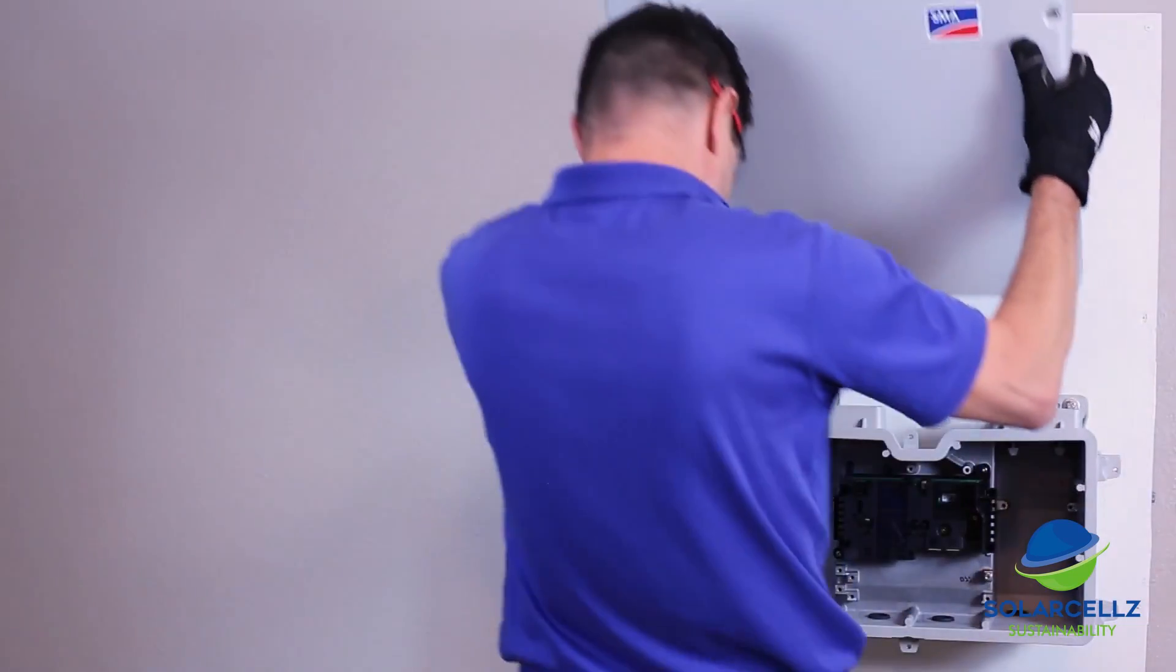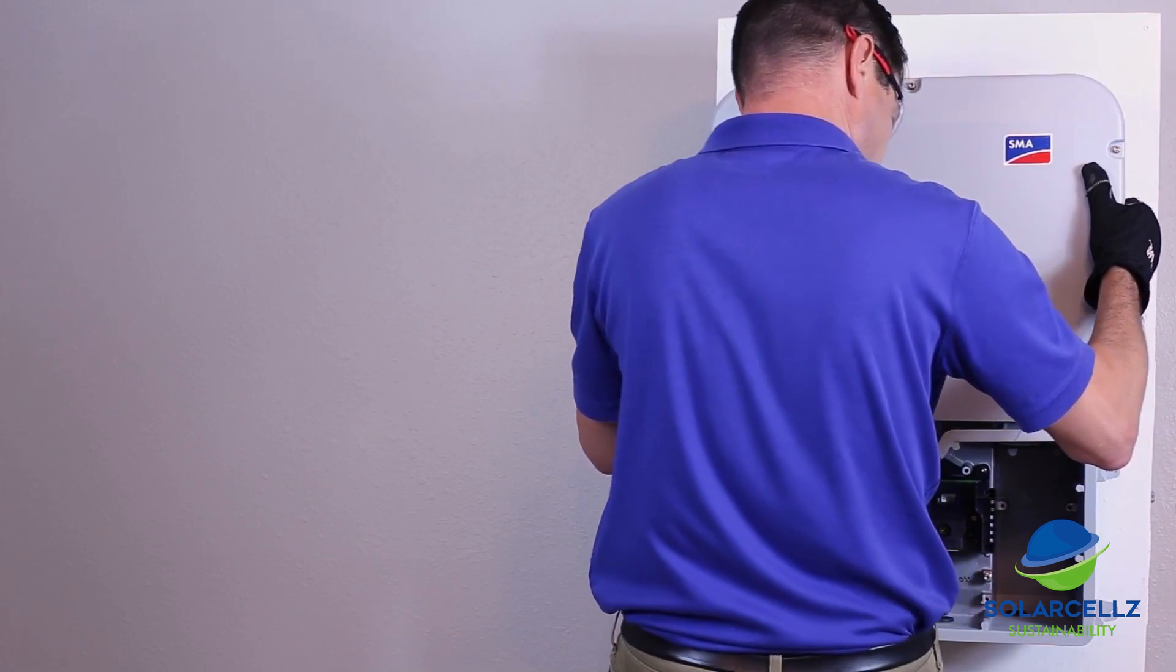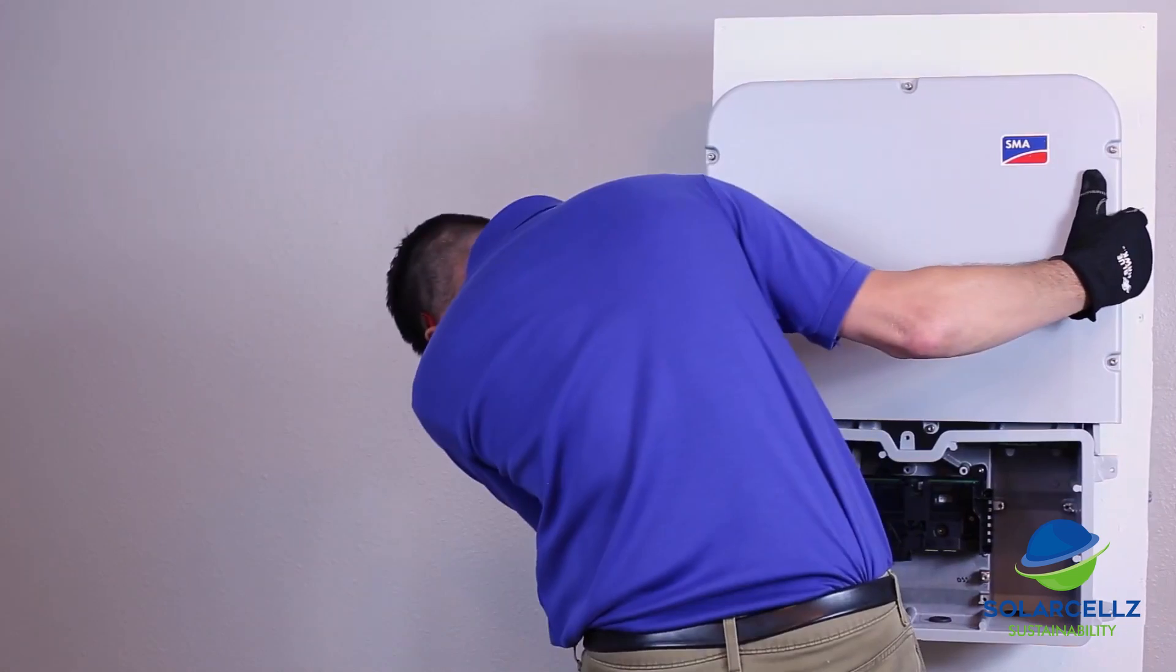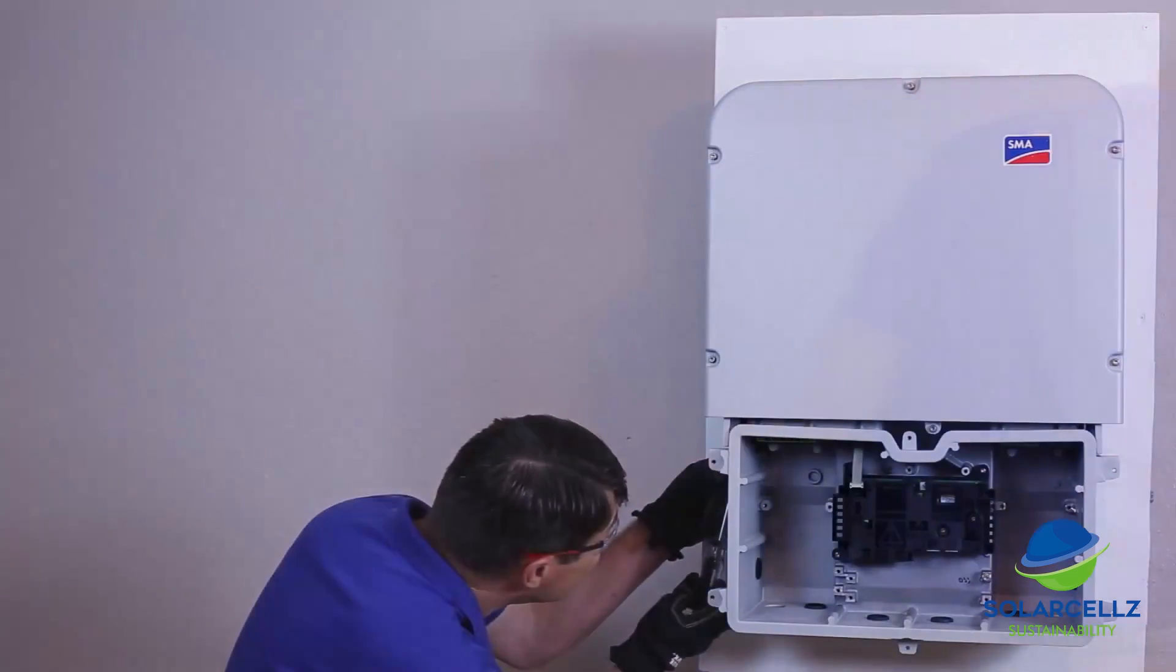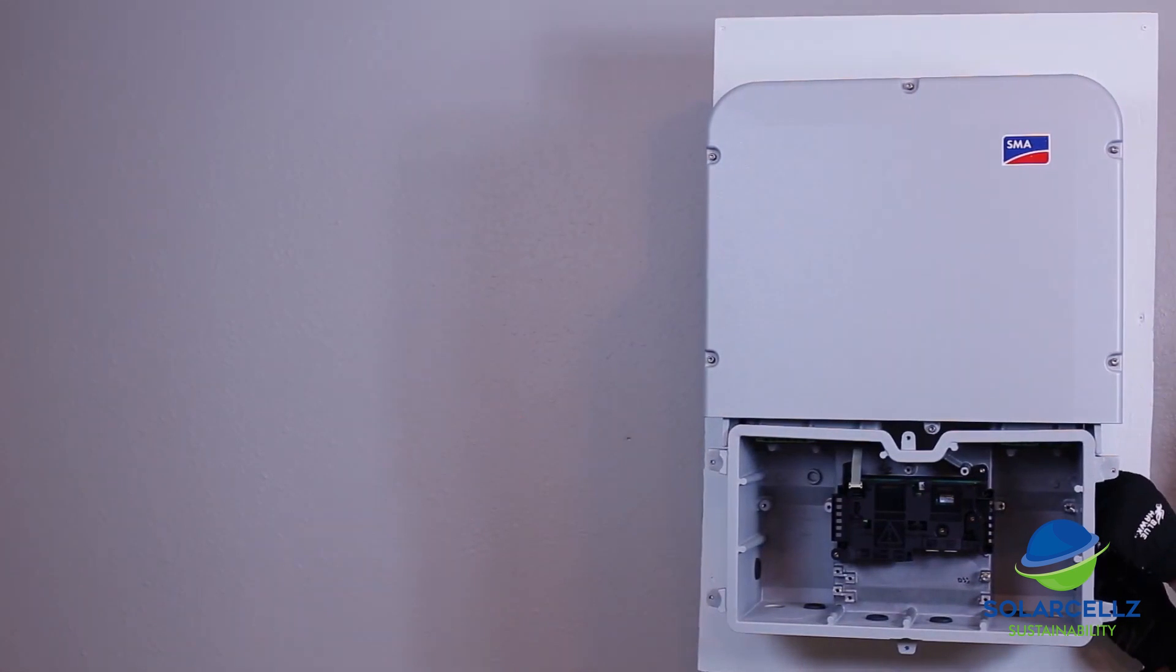Now the power unit can be placed on top of the connection unit and reattached. Ensure the ribbon cable is safely inserted into the connection unit and not pinched or damaged. Secure the power unit to the connection unit by reattaching the four Torx 25 screws and tightening to 53 inch-pounds.